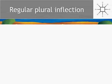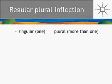In English, there are two ways of looking at a noun: either one of them, or more than one of them. So there are two morphosyntactic properties — singular and plural. If we have a look at some nouns which inflect regularly: we have a fish called a snapper, and when there's more than one of them, there are snappers.